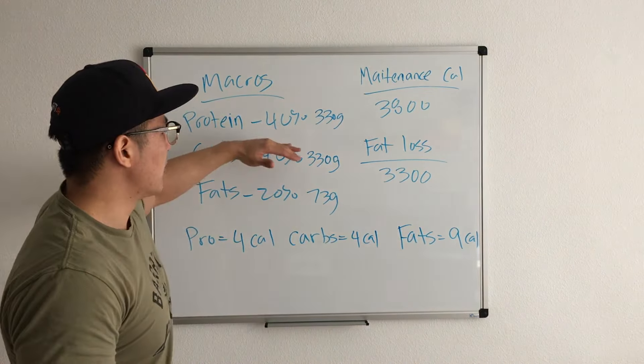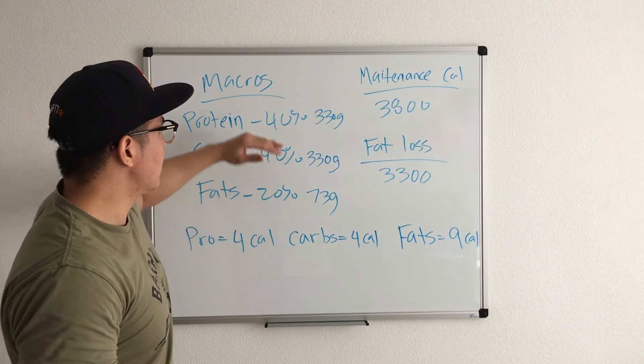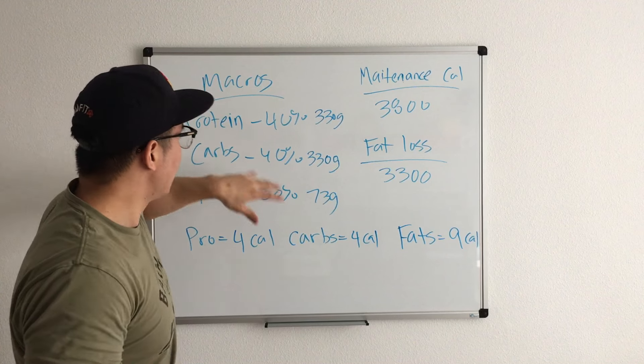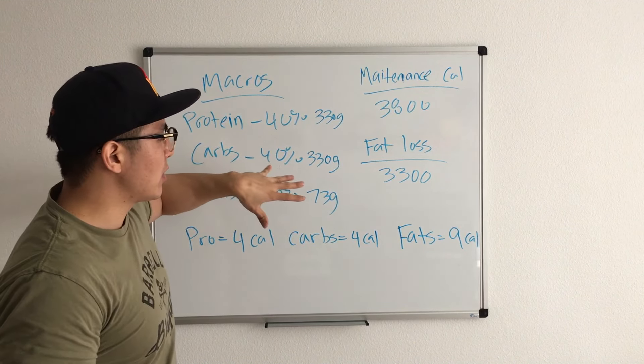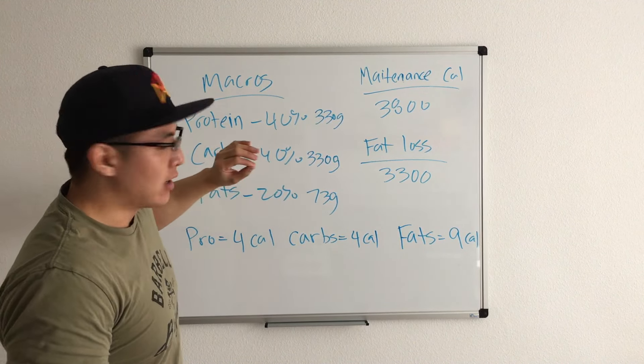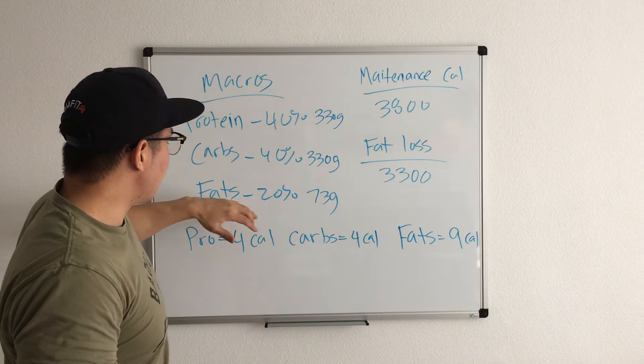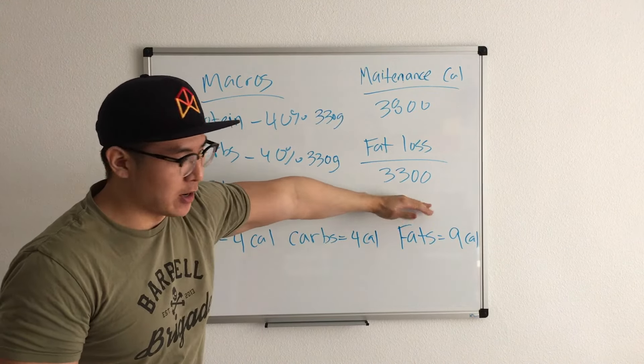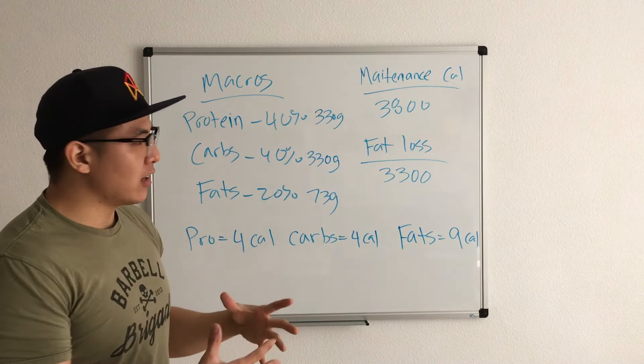So for bodybuilding purposes, I like to use the 40-40-20 split. So 40% of my calories is gonna be from protein, 40% of the calories is gonna be from carbs, and then my last 20% is gonna be from fats. And this is based on the 3,300 number, and when you add that all, it should be 3,300 based on these numbers.